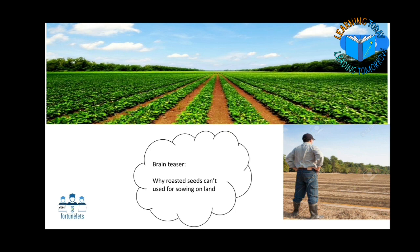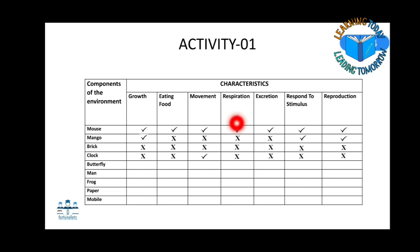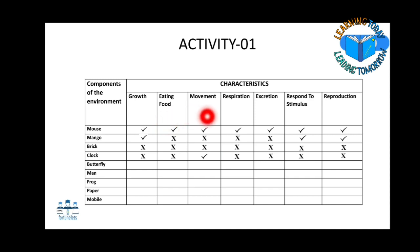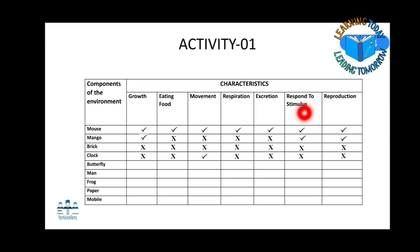Based on what we have learnt so far, we will be doing an activity. Living beings have the following characteristics: growth, eating food, movement, respiration, excretion, responding to stimuli, and reproduction.